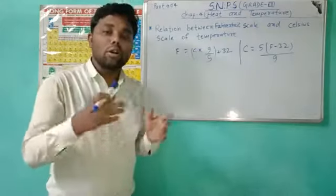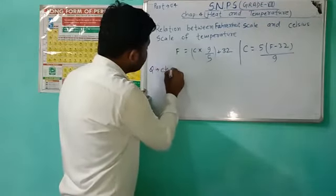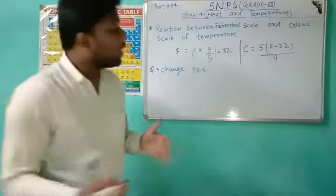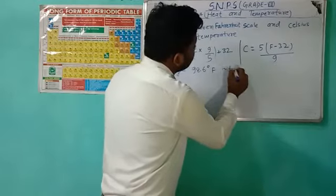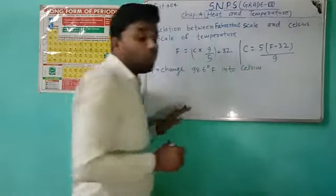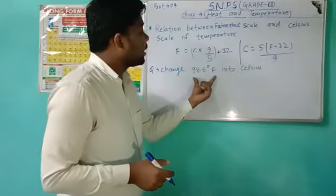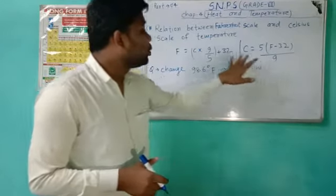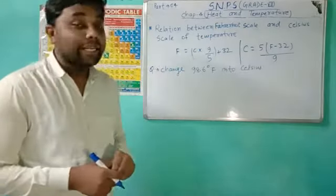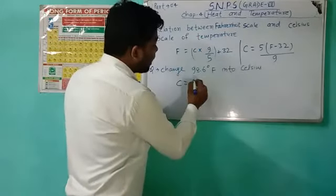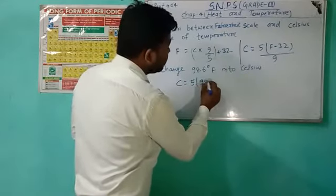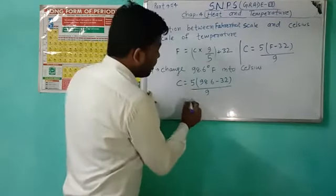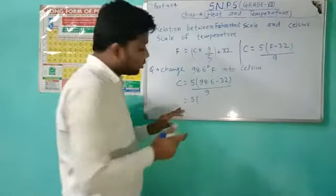Now I am going to solve a question: change 98.6 degree Fahrenheit into Celsius. If we have degree Fahrenheit, we use the formula C = 5 × (F − 32) / 9. So C = 5 × (98.6 − 32) / 9.